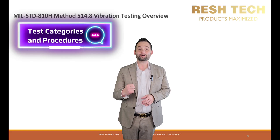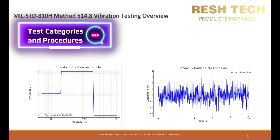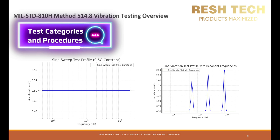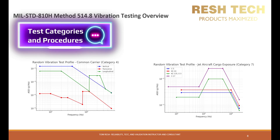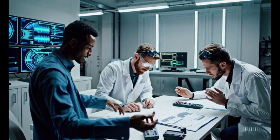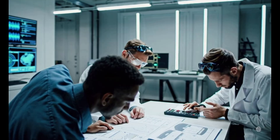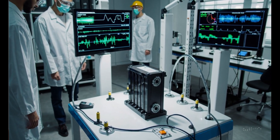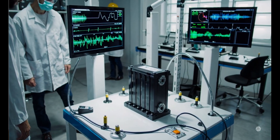Let's look at test categories and procedures. General or random vibration uses a broad spectrum random profile over a range of frequencies, focusing on representative conditions. Swept sine, or sinusoidal, is a sine wave that sweeps through frequencies to pinpoint resonances. Transportation vibration — for truck, rail, ship, or cargo — uses broadband random profiles reflecting transient environments. Each category outlines procedures, recommended durations, and pass-fail criteria, and you can customize parameters to mirror real usage more accurately.